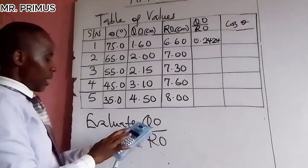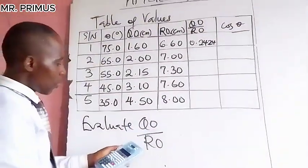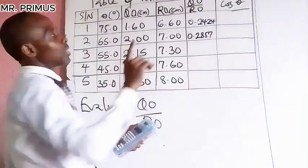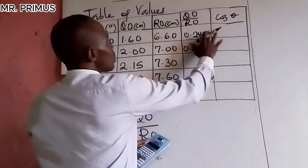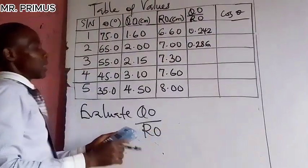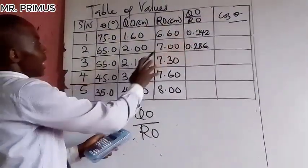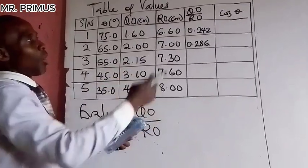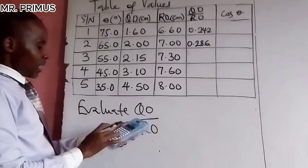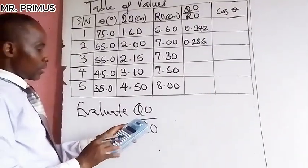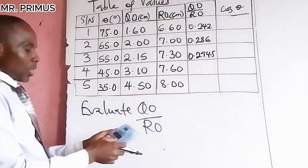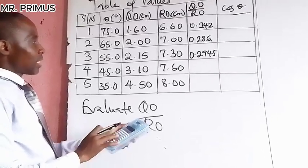The second one: 2.00 divided by 7.00 gives us 0.2857. We are going to leave this in three decimal places — so 0.242, 0.286. Three decimal places is fine, though if it involves cosine, sine, or reciprocal values, use four decimal places. Next: 2.15 divided by 7.30 gives us 0.2945.